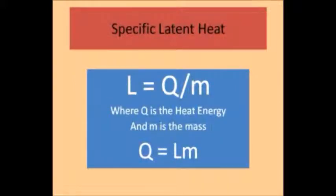The specific latent heat is the energy required to change the state of a substance, solid to liquid or liquid to gas, without changing its temperature. It's expressed as energy per unit mass. The formula L for latent heat equals Q divided by M where Q is the heat energy and M is the mass. Rearranging the formula we get Q for energy equals the specific latent heat multiplied by the mass.